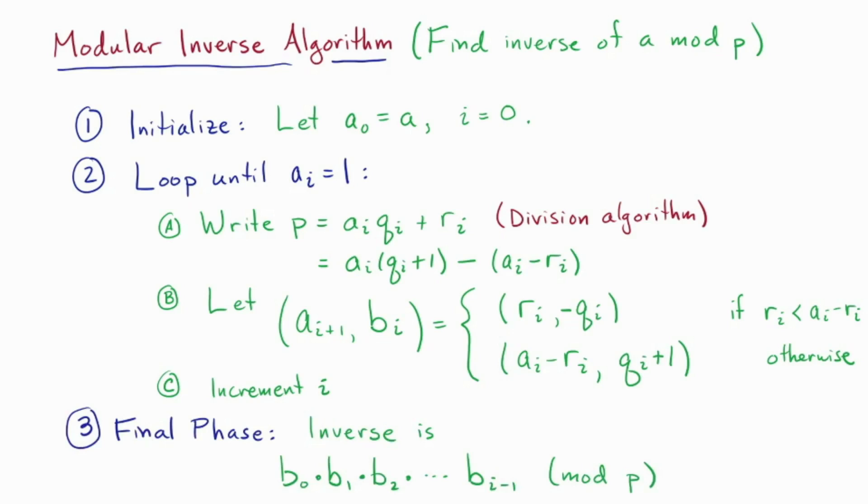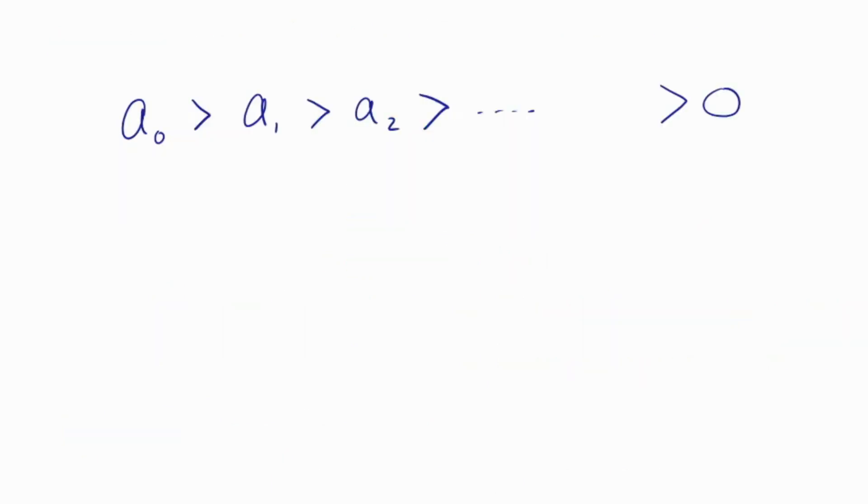So next we should convince ourselves that this works. The key idea there is sometimes called descent. It's the idea that we keep repeating something in a loop where we have some number that keeps getting strictly smaller. If these numbers are integers, this simply can't continue forever. But in the algorithm above, this can only stop if we get to ai equals 1. So we've got to reach 1. Why can it only stop if we get to ai equals 1?